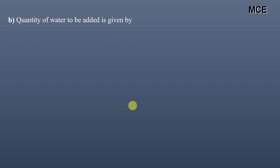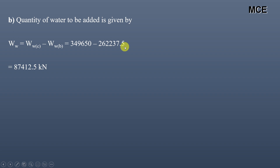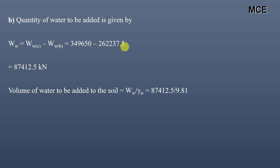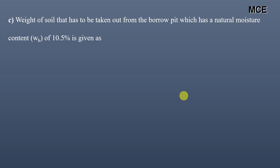The quantity of water to add to the borrow pit soil is found by taking the difference between the water quantity of the compacted soil and the borrow pit soil: 3,496,500 − 2,622,375 = 874,125 kN. This is the weight of water difference. The volume of water equals this weight divided by the unit weight of water: 874,125 ÷ 9.81 = 8,910.55 m³, approximately 8,911 m³. This is the volume of water to add to achieve 14% moisture content.